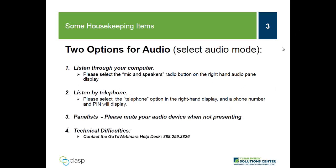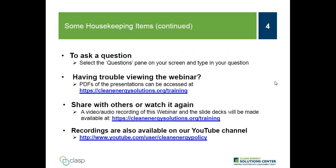A few webinar features to note: for audio, you may listen through your computer or over your telephone. If you choose to listen through your computer, select the mic and speakers option in the audio pane to eliminate feedback and echo. If you dial in by phone, select the telephone option and a box will display the telephone number and audio pin. Panelists, please mute your audio device while not presenting. If anyone has technical difficulties, contact the GoToWebinar Help Desk at 888-259-3826. Audience members are encouraged to ask questions at any point by typing into the question pane.